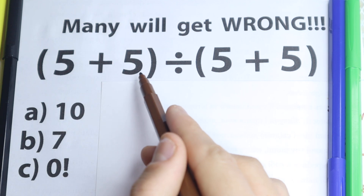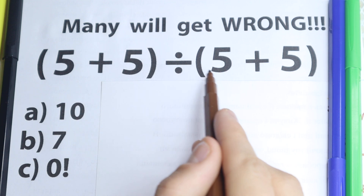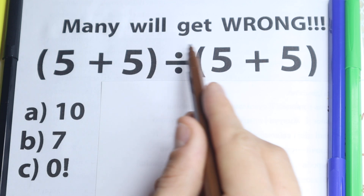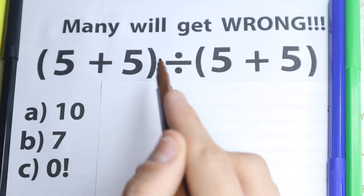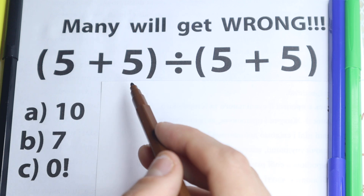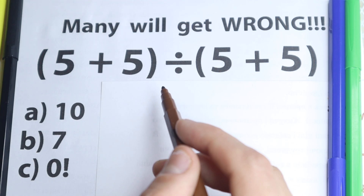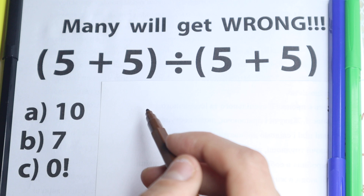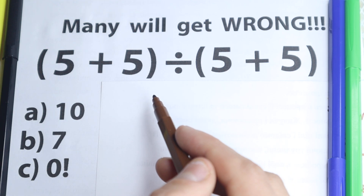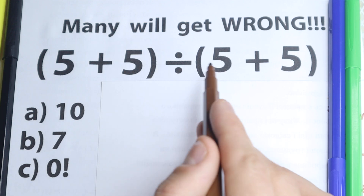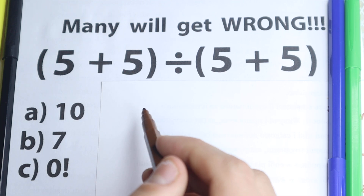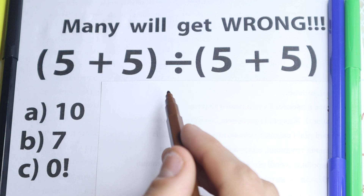So we have 5 plus 5 in parentheses and we divide it by 5 plus 5 in parentheses. Really easy question on the first side — we don't have any powers, we don't have any complicated expressions with square roots, really easy expression. Right now I suggest you to pause the video and try to solve it by yourself. It will be really interesting to check our answers at the end of the video because this is a tricky question. So here are our options — we have three options, so pause the video and try to solve it by yourself. What do you think is the correct answer?